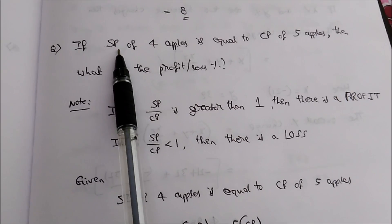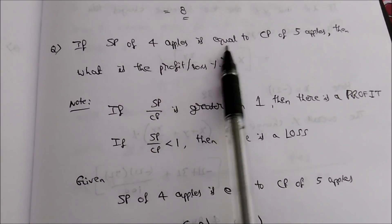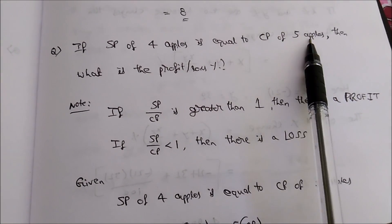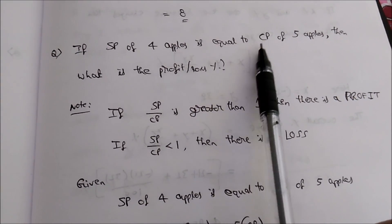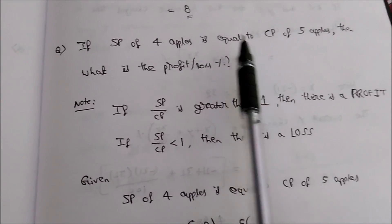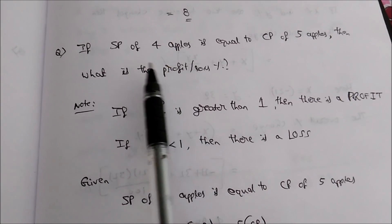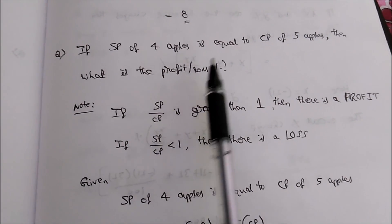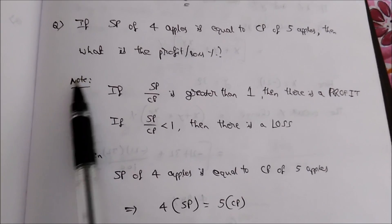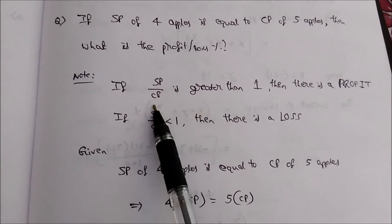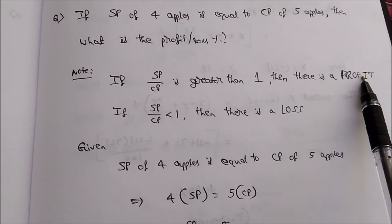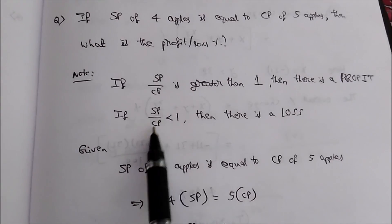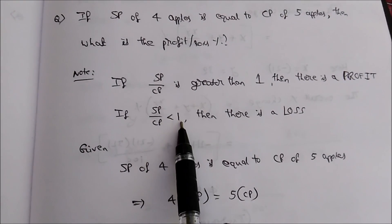They have given: selling price of 4 apiece is equal to cost price of 5 apiece. We need to find out whether this is a profit or loss, and find the profit or loss percent. First, a key note: if selling price divided by cost price is greater than 1, then there is a profit.